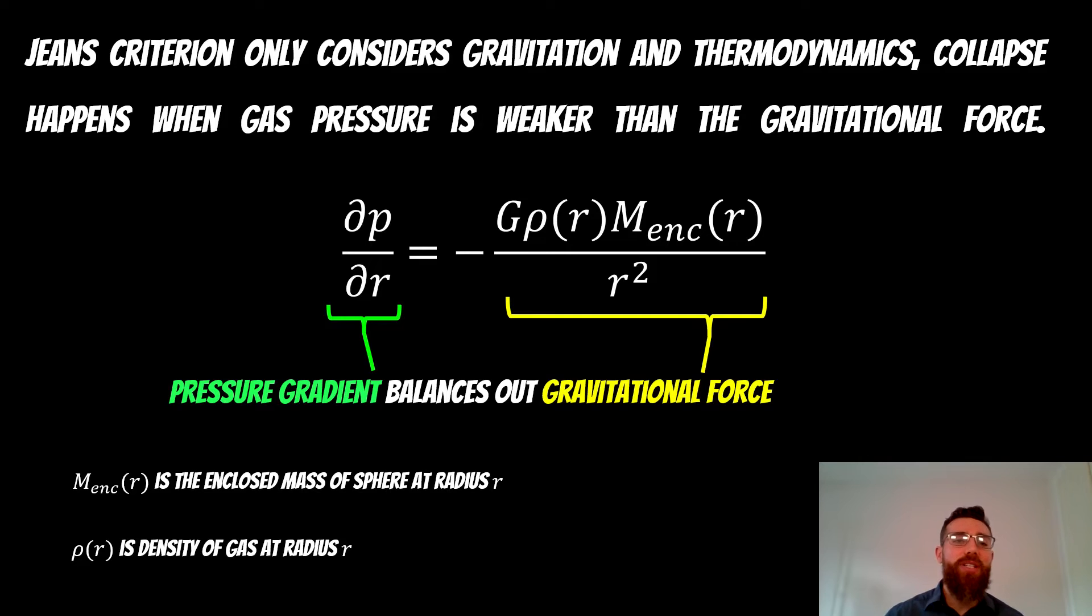The Jeans criterion only considers gravitation and thermodynamics. Collapse happens when the internal gas pressure is weaker than the gravitational force trying to collapse it. You've got an expression here, an equation.